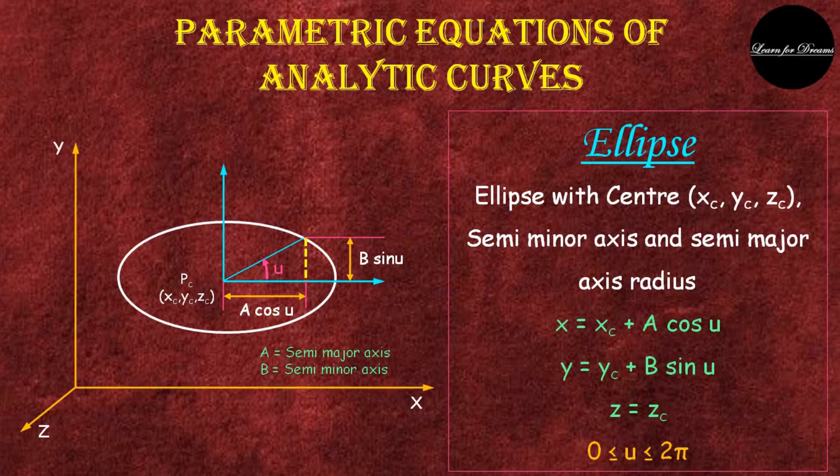Limit of u is from 0 to 2π, that is 360 degrees.